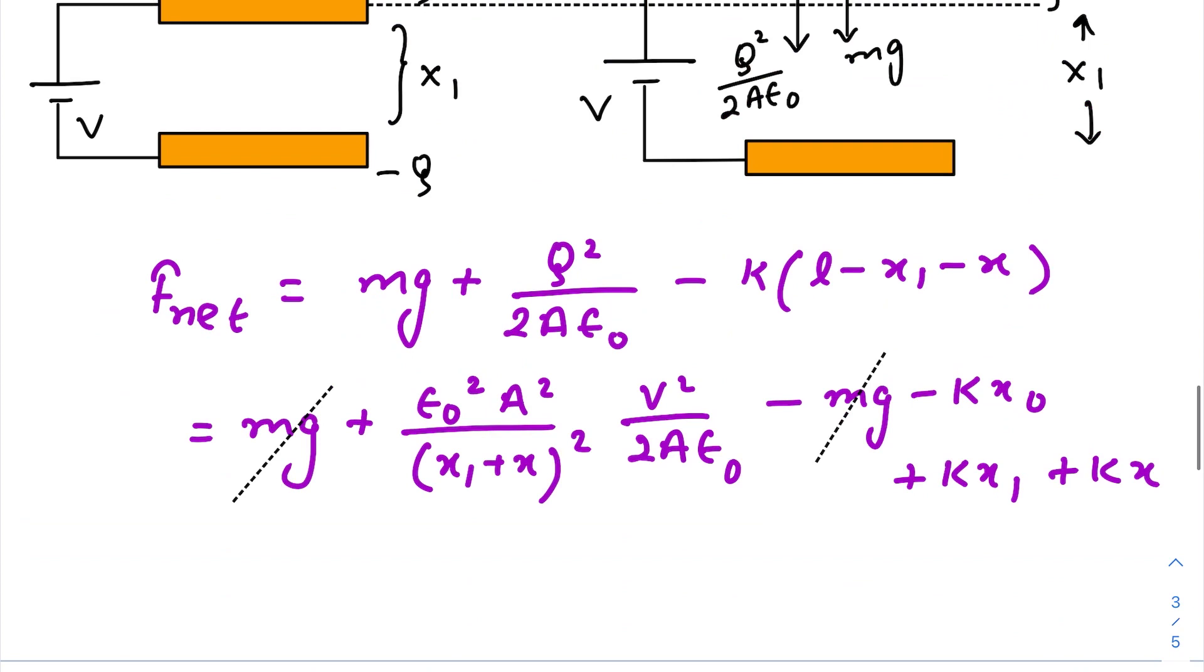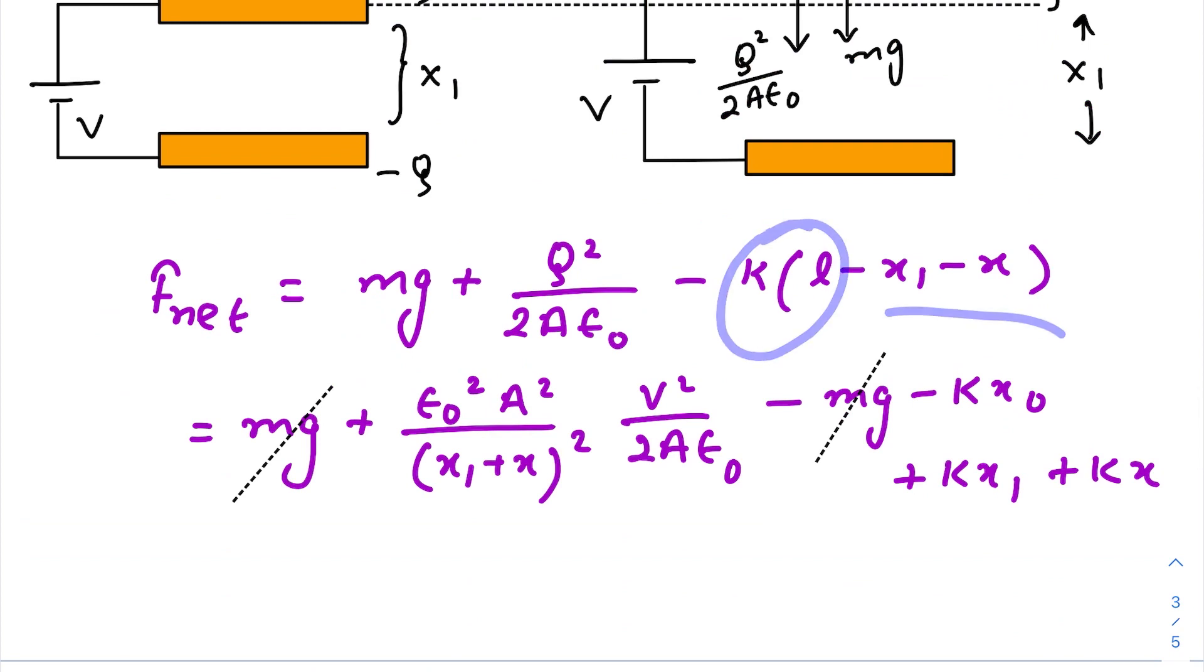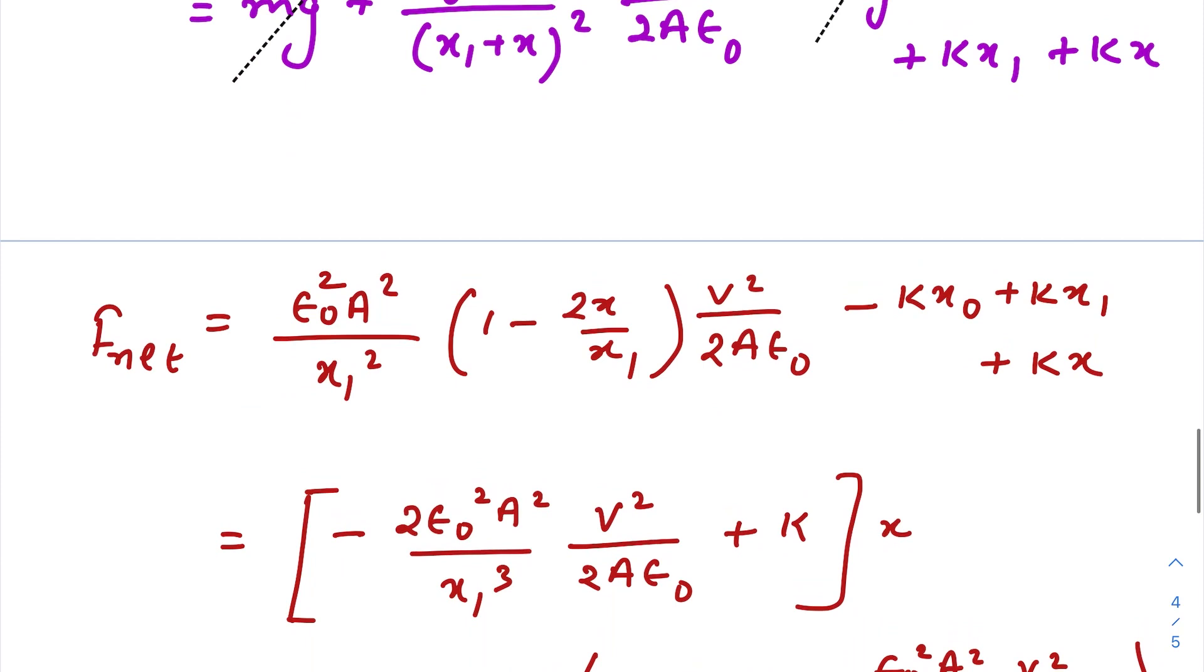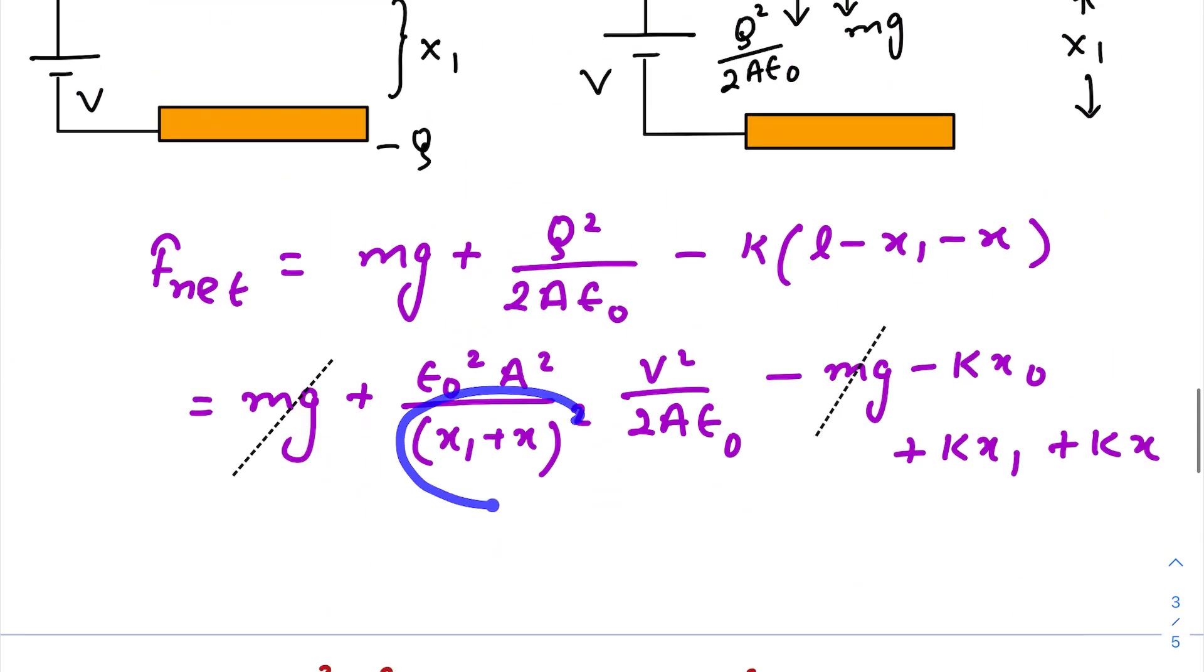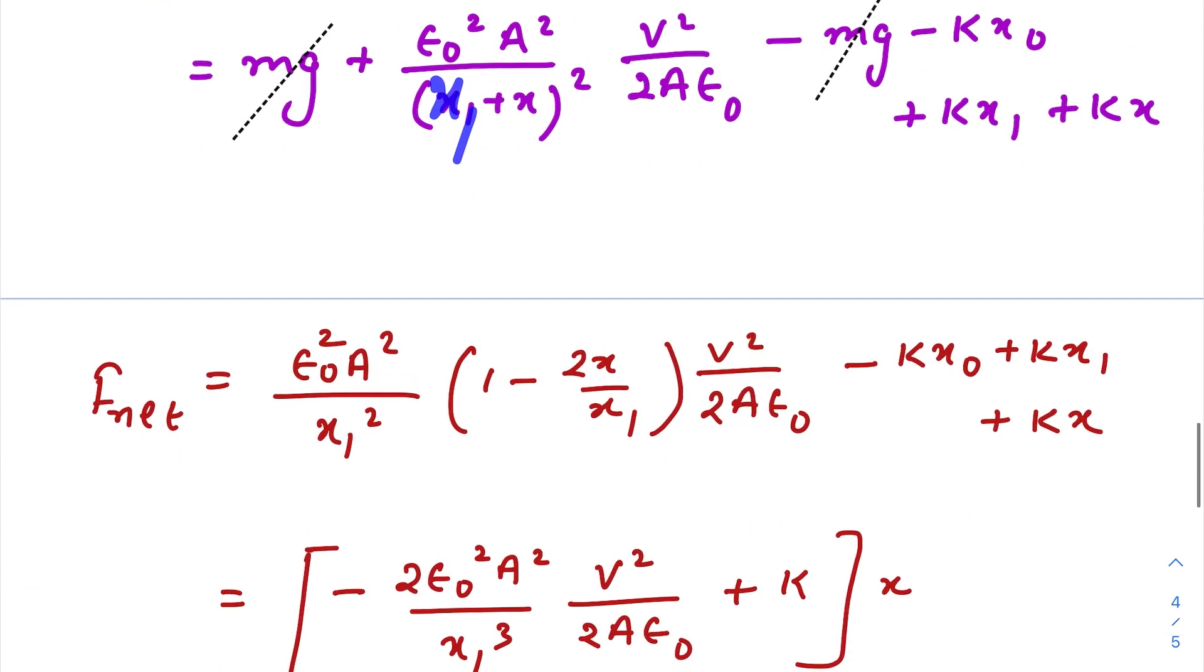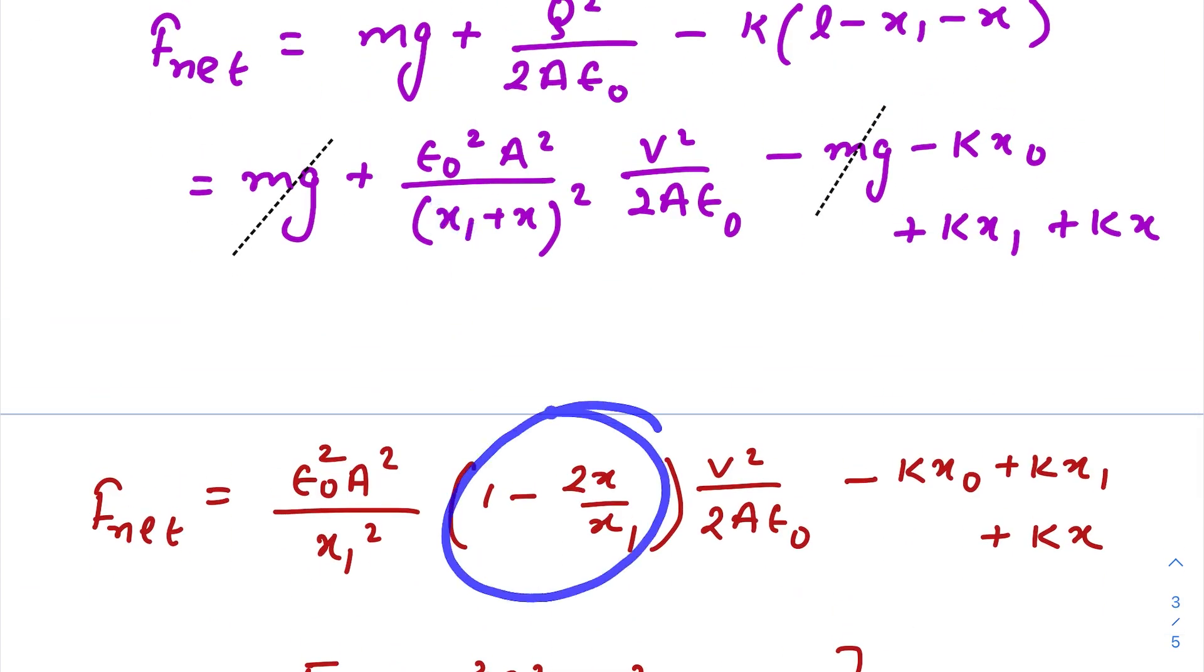Now just put the value of k l here and these things get cancelled out. And we know when you work with SHM equations, of course the displacement x is very small. So we will just use the binomial expansion for this denominator. Just take x1 common here and raise this whole thing and take the binomial expansion and take the first order term only.